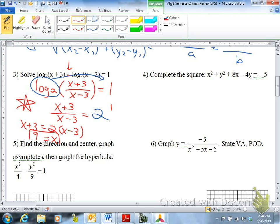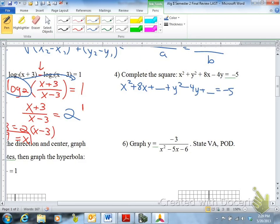Completing the square. So this is a circle when you complete the square. x squared plus 8x plus blank plus y squared minus 4y plus blank equals negative 5. And the formula you would use is b over 2 squared, where b is this number 8, so 8 over 2 squared is 16. You add 16 to both sides. 4 over 2 squared is 4.